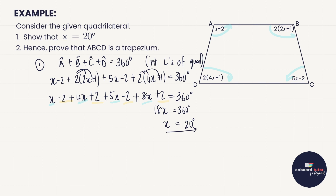Now I'll use this x = 20 degrees to quickly work out the size of each angle by substituting 20 in for x. That gives us angles of 18°, 82°, 162°, and 98°. Now they say prove that ABCD is a trapezium.